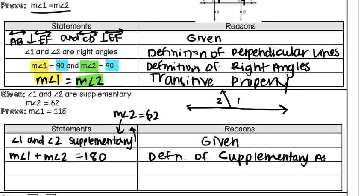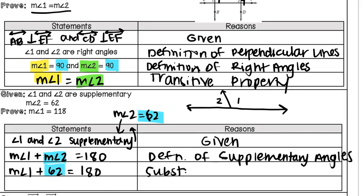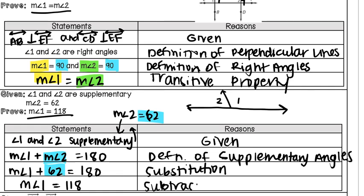We take what was given — the measure of angle 2 is 62 — and plug it into our equation, rewriting it as the measure of angle 1 plus 62 equals 180. Since we replaced one part, that is our substitution property. To reach the final line, the measure of angle 1 equals 118, we subtract 62 from each side. So the last reason is the subtraction property of equality.